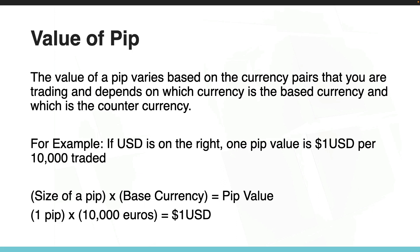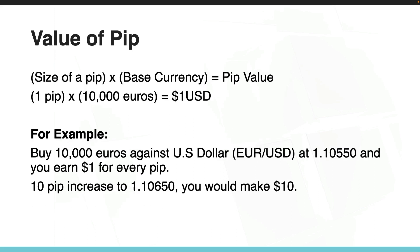Here we have a formula: size of a pip times base currency equals pip value. So if we put one pip times ten thousand euros, we get one USD.